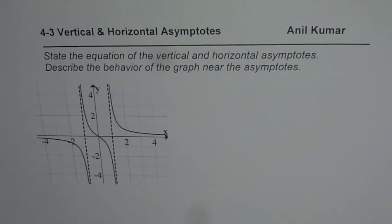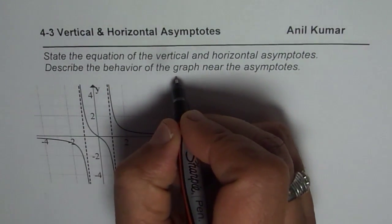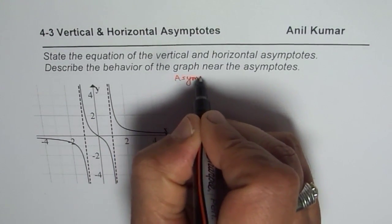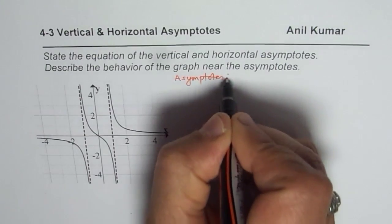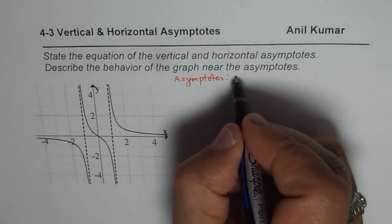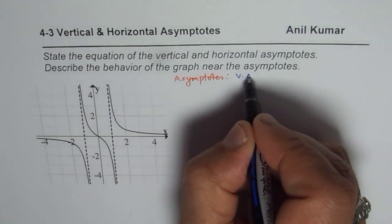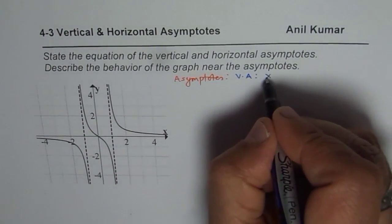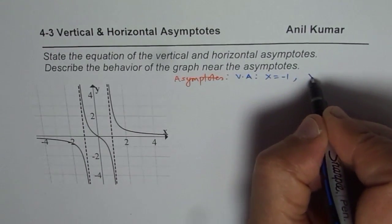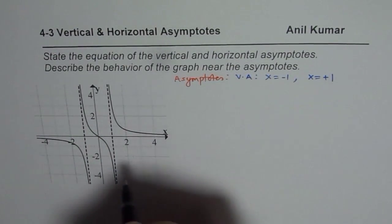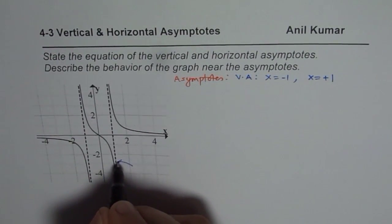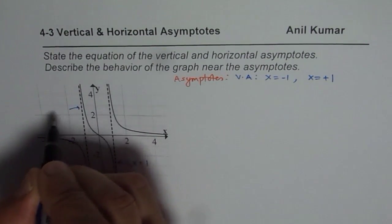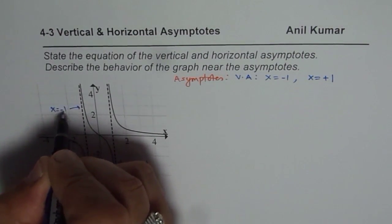Here is my suggestion. Let us first write down the asymptotes. In this particular case, we have two vertical asymptotes. One is x equals to minus one, and the other one is x equals to plus one. So here we have x equals to plus one and this one is x equals to minus one.